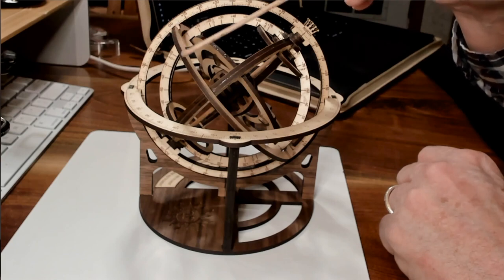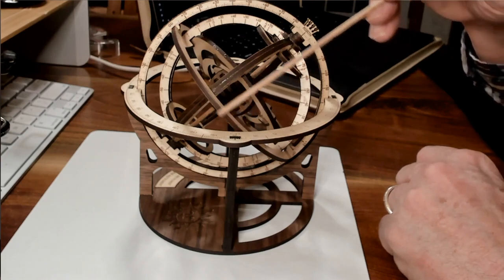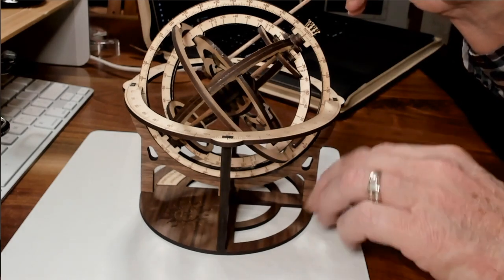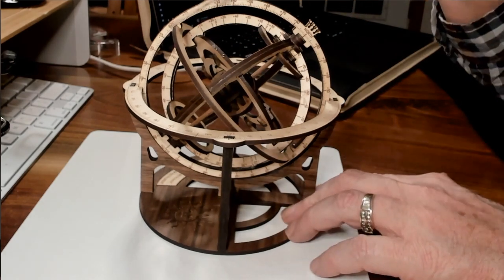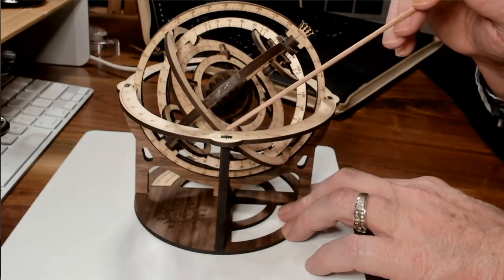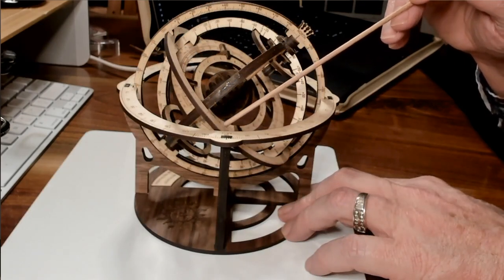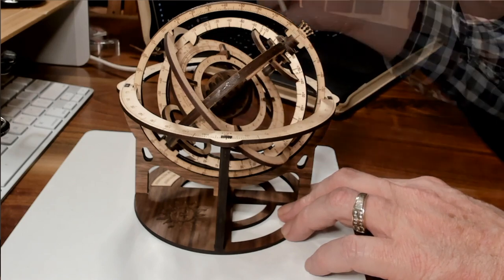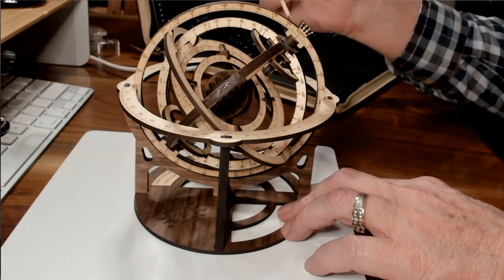This ring right here is the equator of the earth. This is the equatorial ring of the earth and the hour line. This part of the hour line would be approximately 6 a.m., 6 p.m. would be here, and noon here.